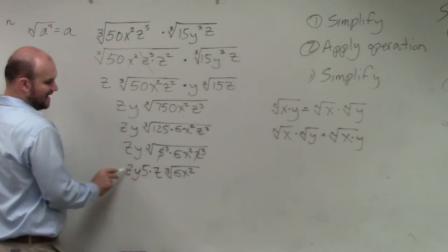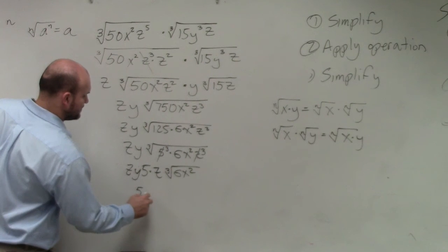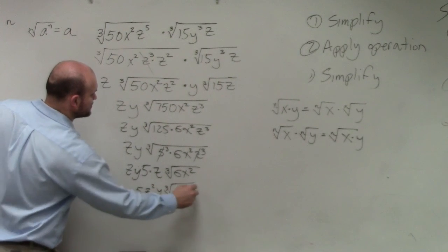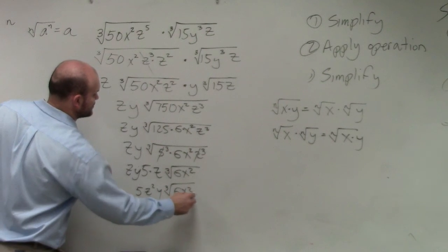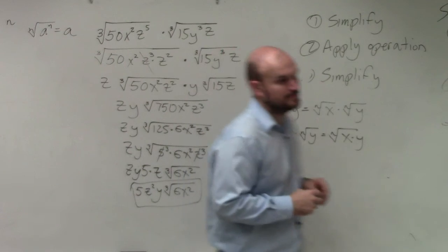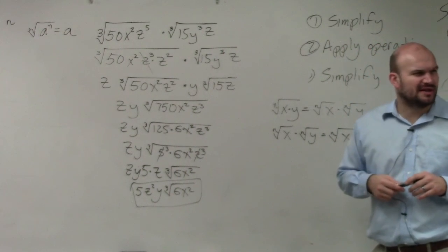So then, I have two z's here, right? So my final answer would be 5z squared y cube root of 6x squared.